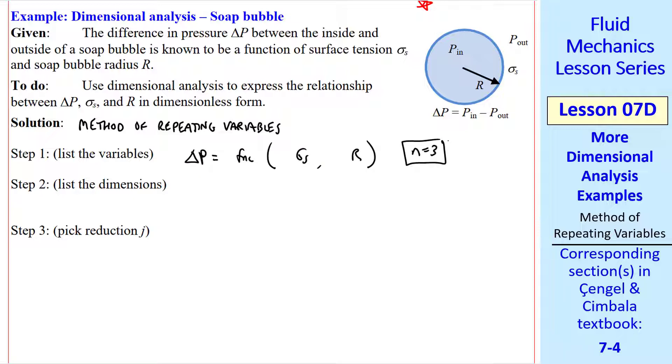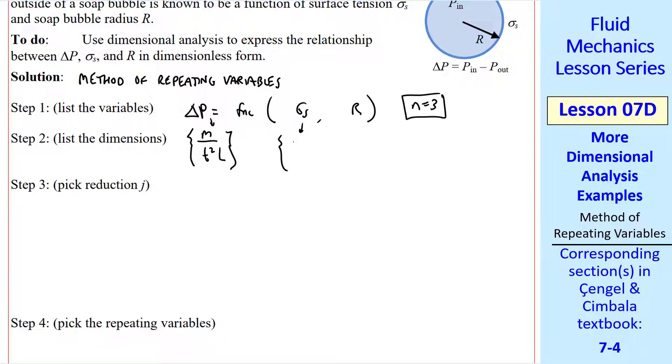Step 2, list the dimensions. In terms of primary dimensions, pressure is a force per area, which is ml over t squared, and then an l squared in the denominator, which gives us m over t squared l. Sigma s is a force per length. Its dimensions are m over t squared, with 1 less l in the denominator, compared to pressure. Radius is l, of course.